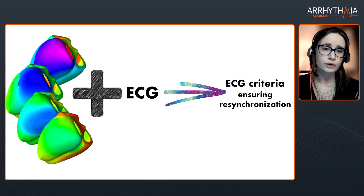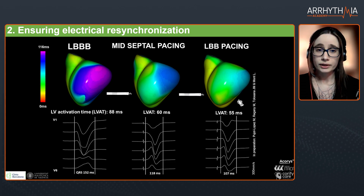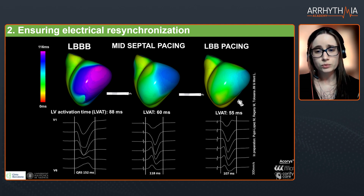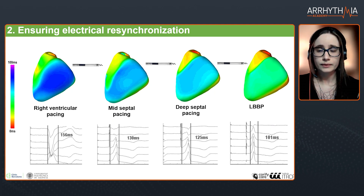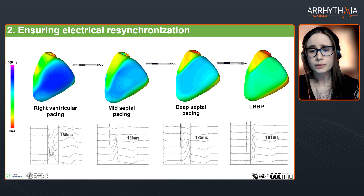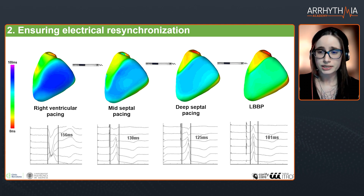With ECGI and the ECG together, we want to move forward to having only ECG criteria for resynchronization. For that, we are doing prospective work: as we screw into the septum, we obtain ECGI maps at each step and try to correlate those maps with the ECG, so that in the future the ECG alone will tell us if we are truly resynchronized. We are correlating these maps with the ECG to develop resynchronization criteria.